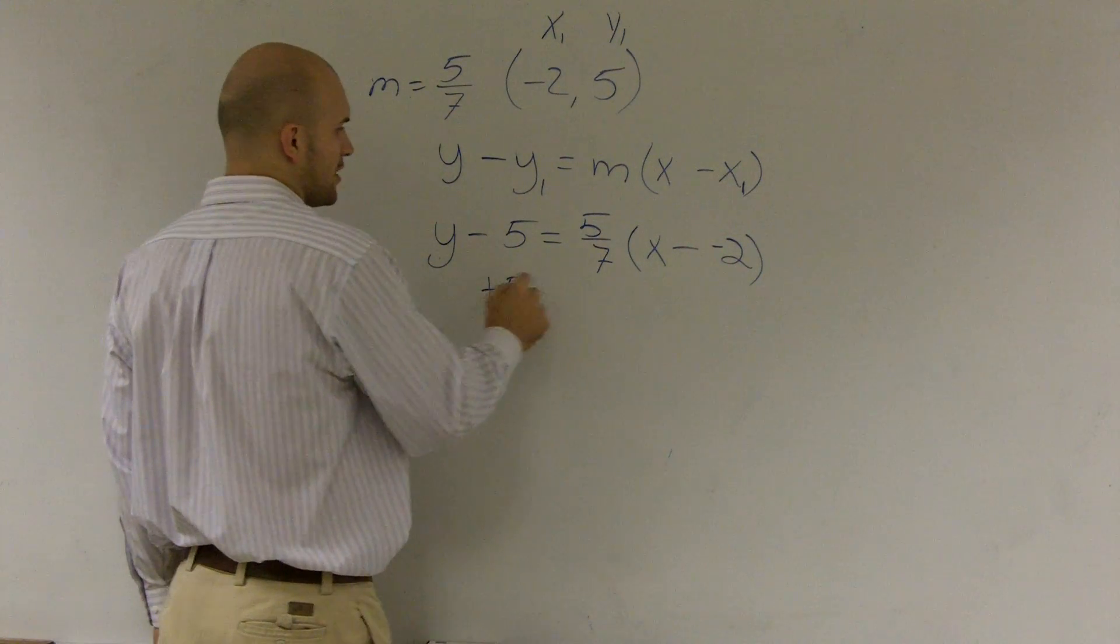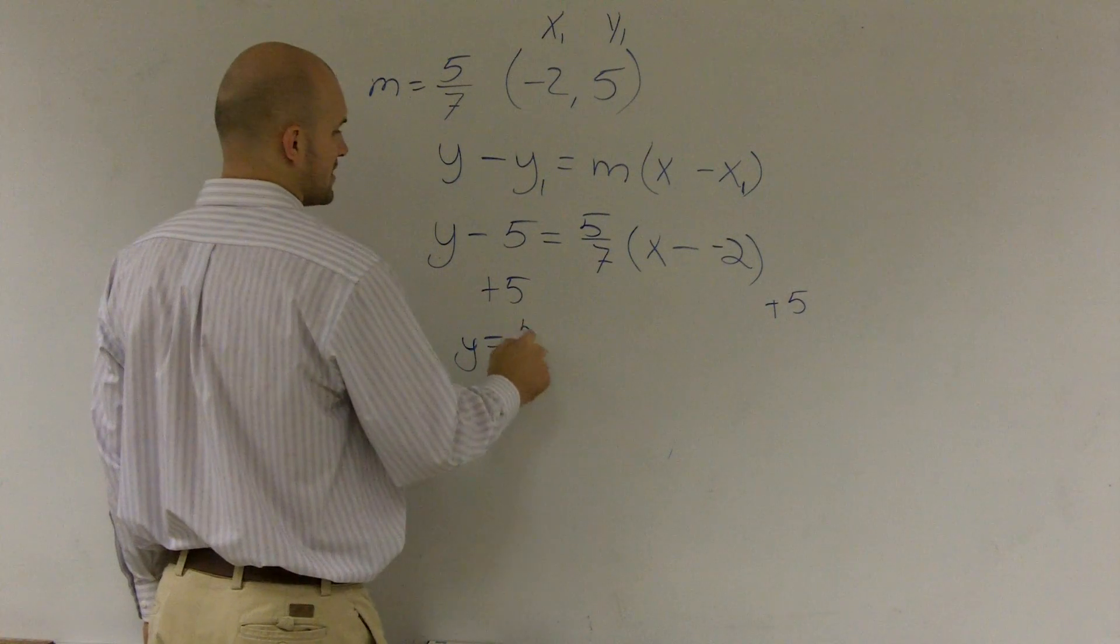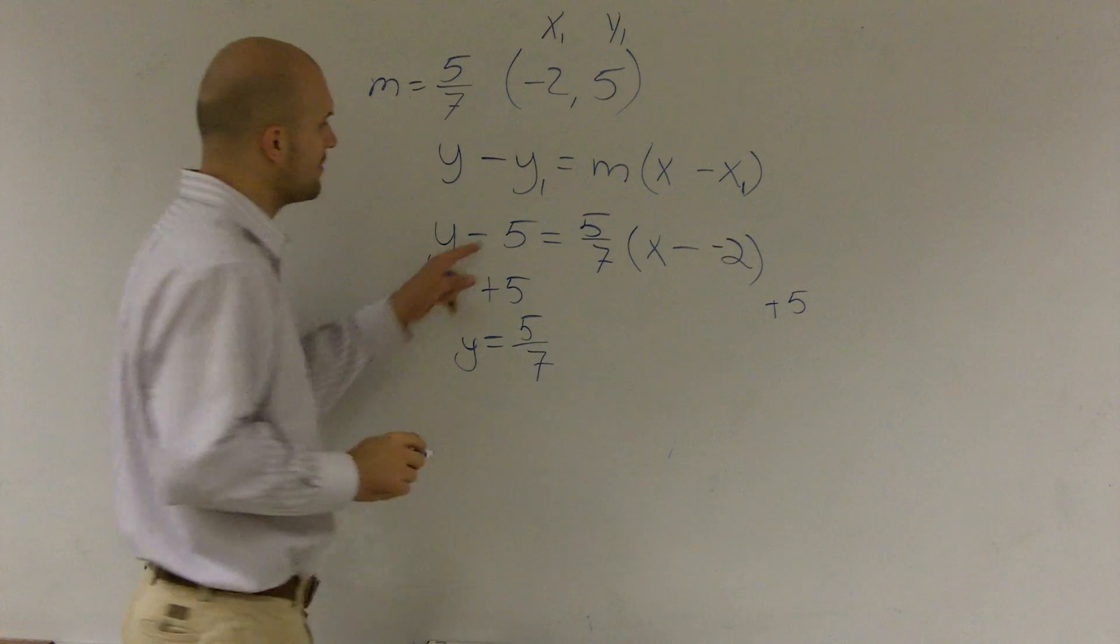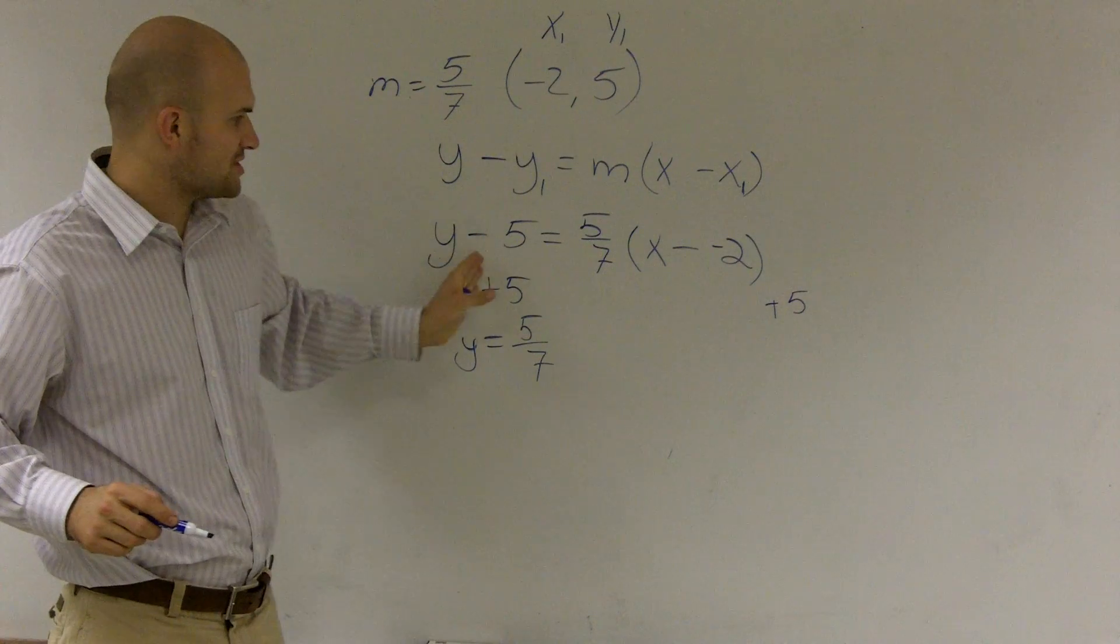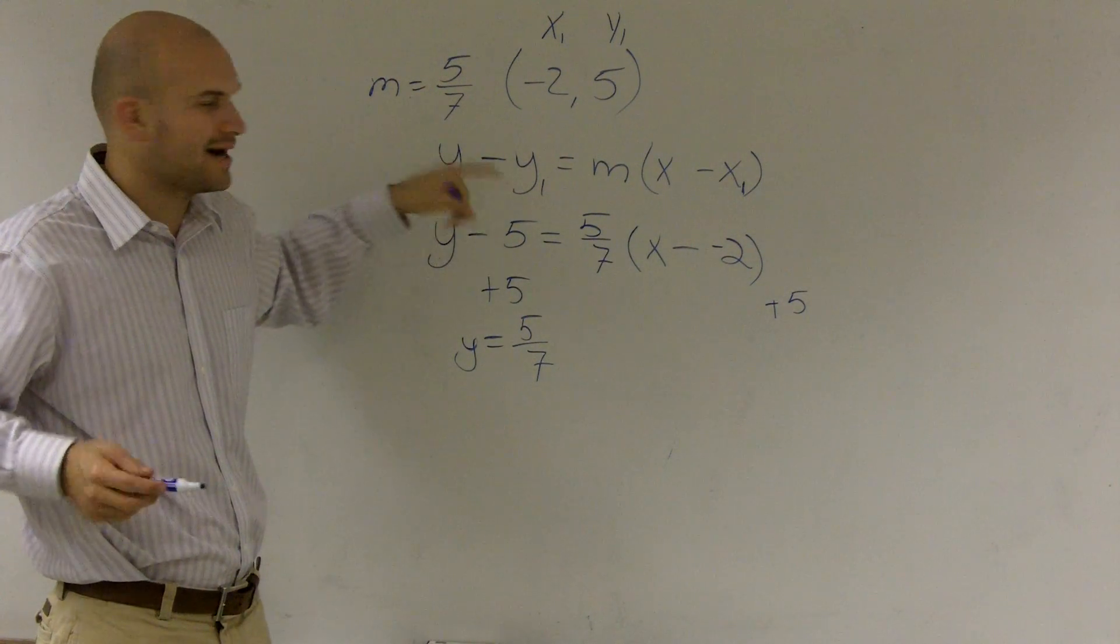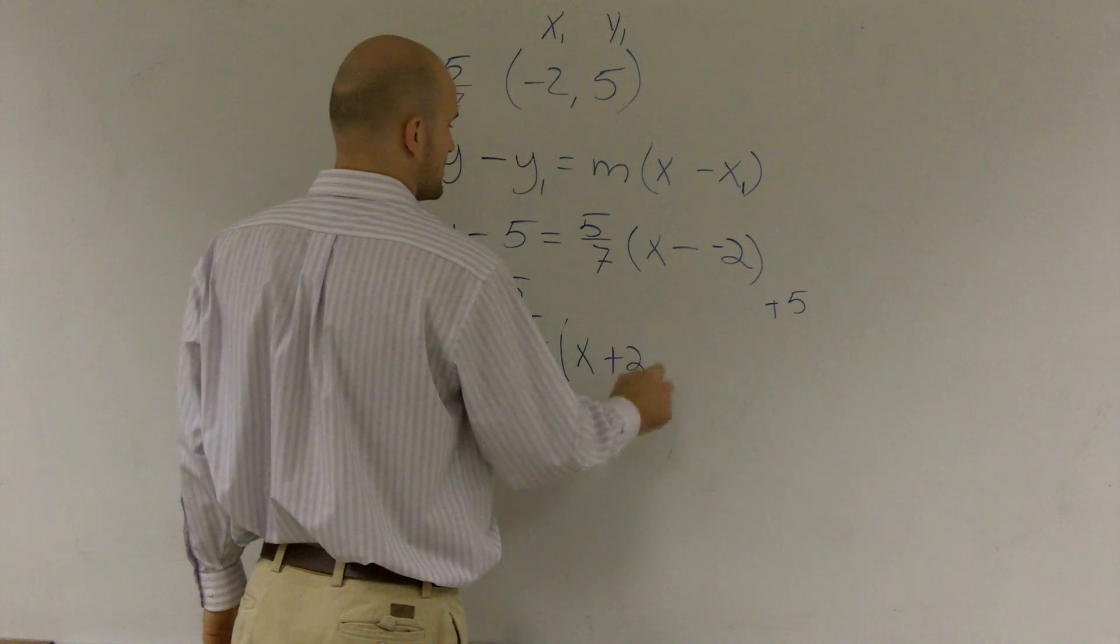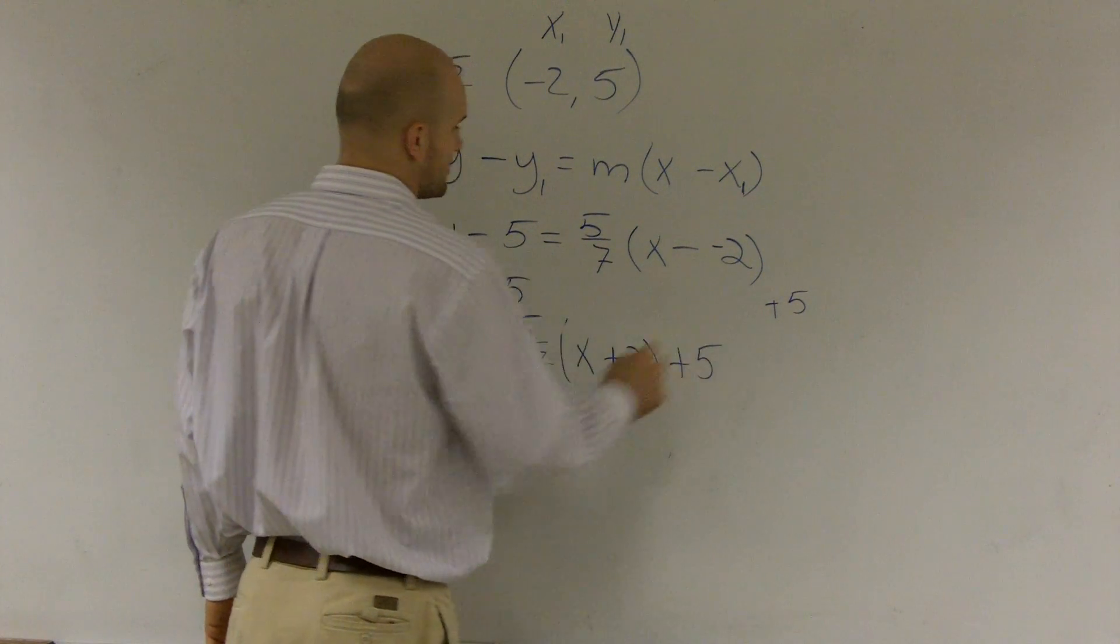I can add my 5 on both sides. Therefore, I get y equals 5 sevenths. And the reason why I wanted to plug it in for this y is because it's much easier to add a 5 over then. If you see adding over here, then you would have a negative y and it just gets a little more confusing. Times x plus 2 plus 5.